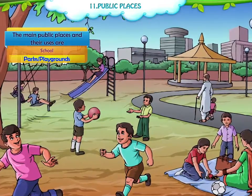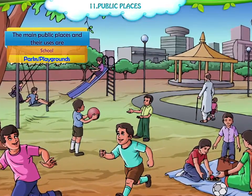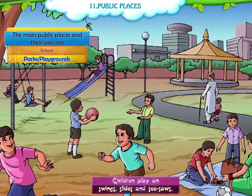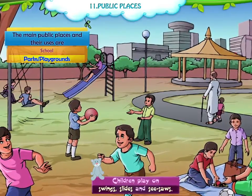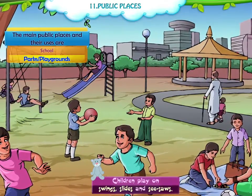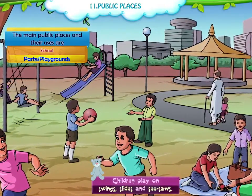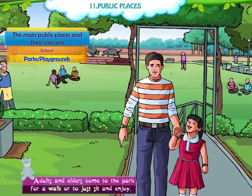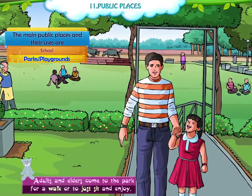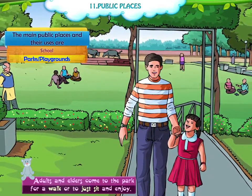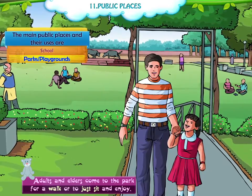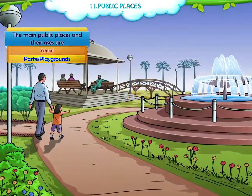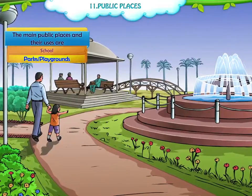Parks and Playgrounds. Neighbourhoods have parks where children play on swings, slides and seesaws. Adults and elders come to the park for a walk or to just sit and enjoy. Many parks have water fountains in them.